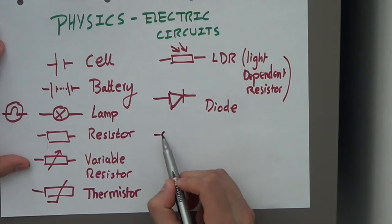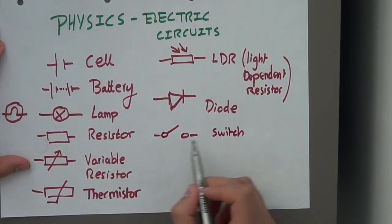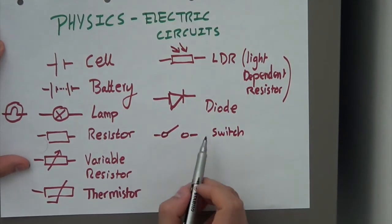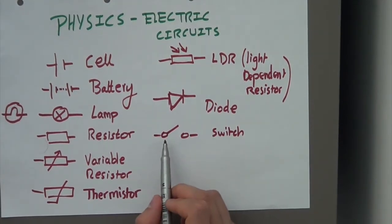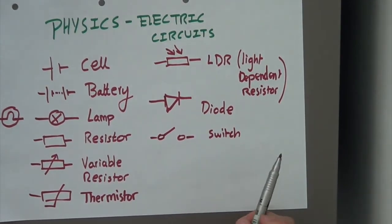Some other symbols you need to know. This is a switch. The moment it's open, no current is flowing through it, and just air is present, and air is a bad conductor of electricity.